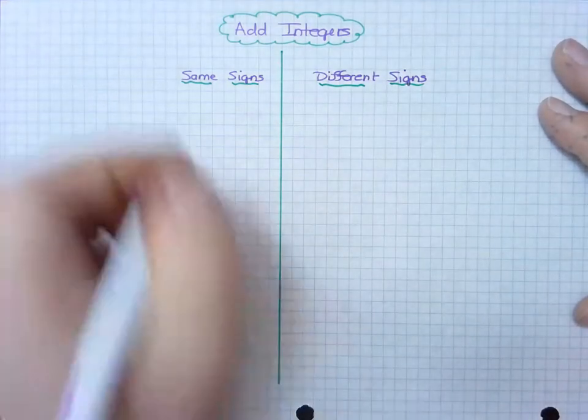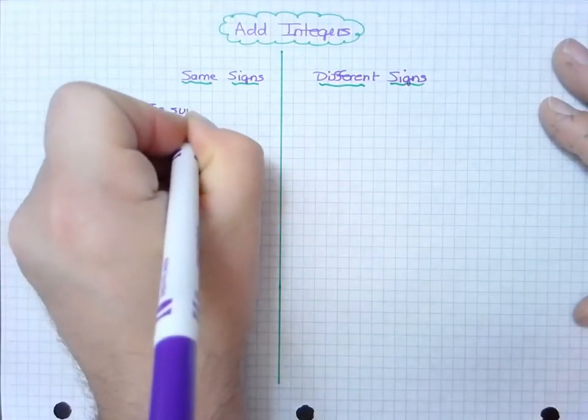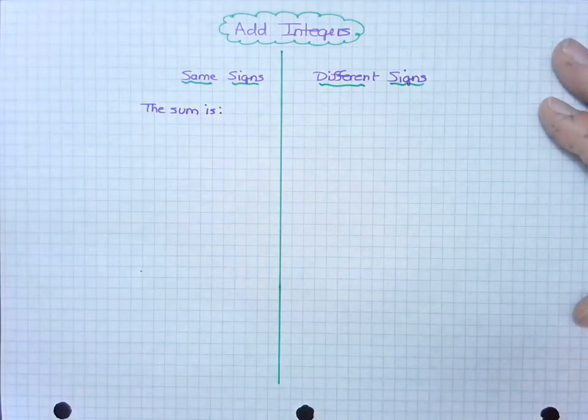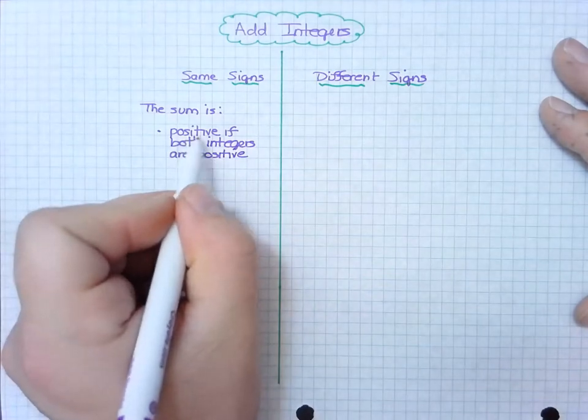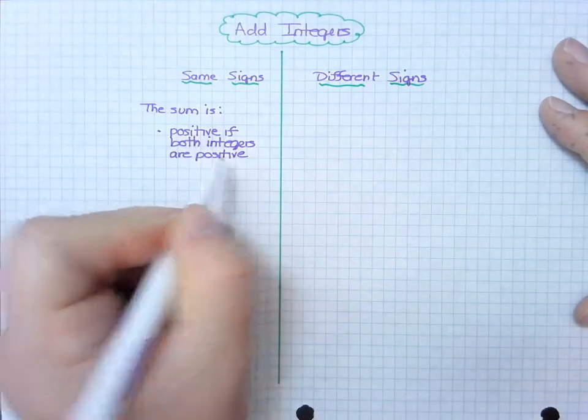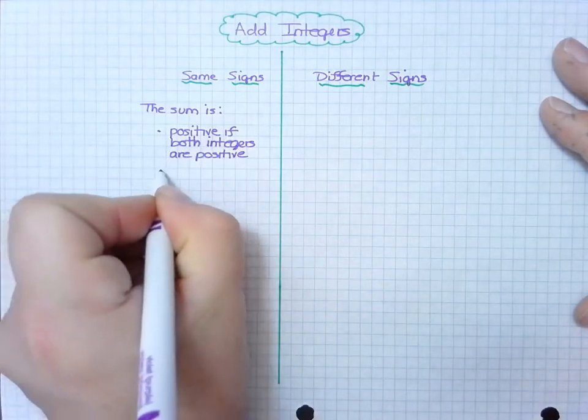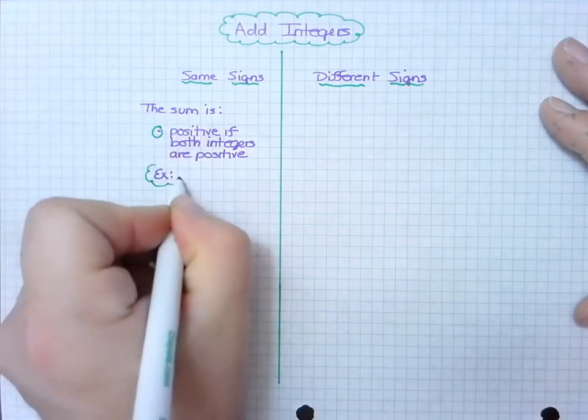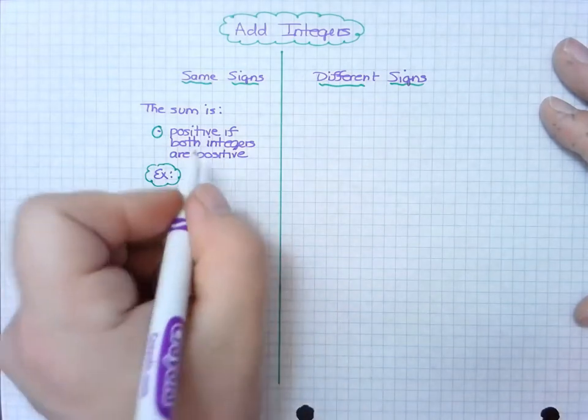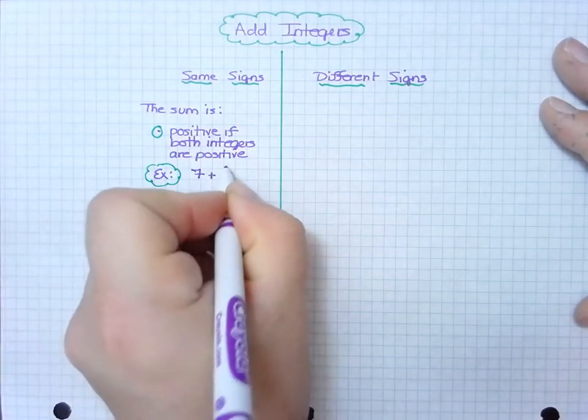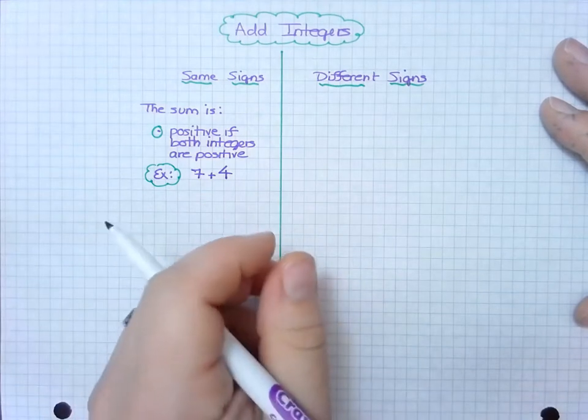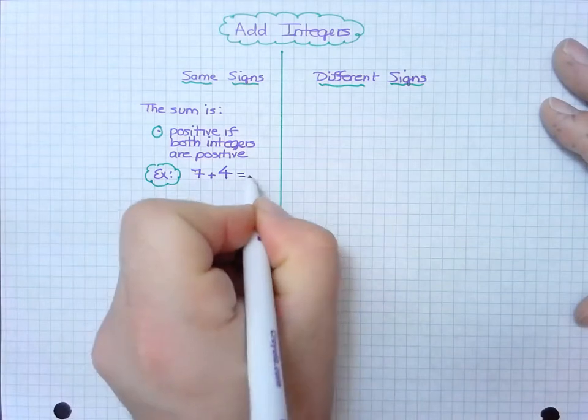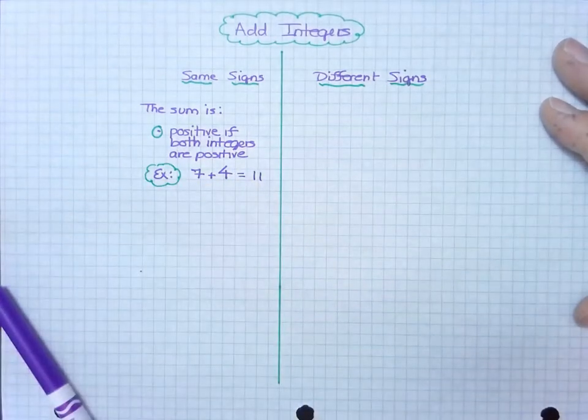So the sum is positive if both integers are positive. So let's look at an example. If I have 7 plus 4, we'll notice how both of those are positive and so the answer is positive. I like to clearly indicate my answer.